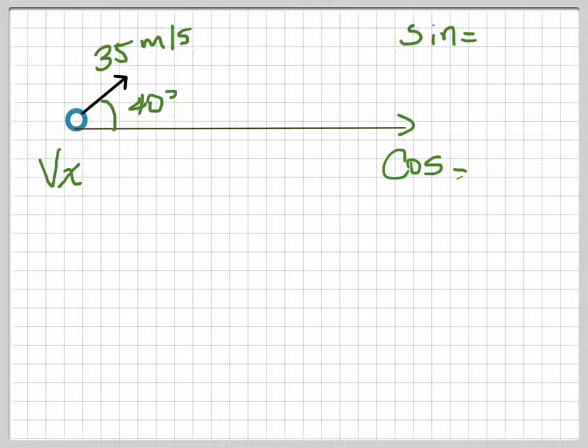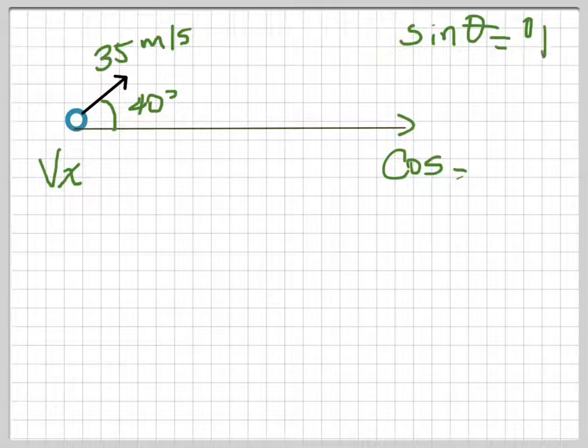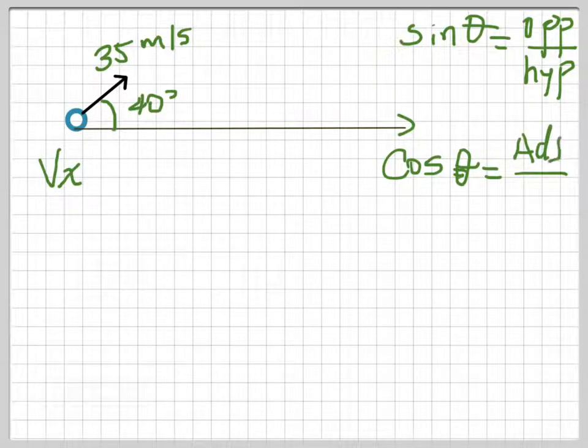The sine of the angle—I forgot to write the angle—is equal to the opposite divided by the hypotenuse. The cosine of the angle is equal to the adjacent side of the triangle divided by the hypotenuse.